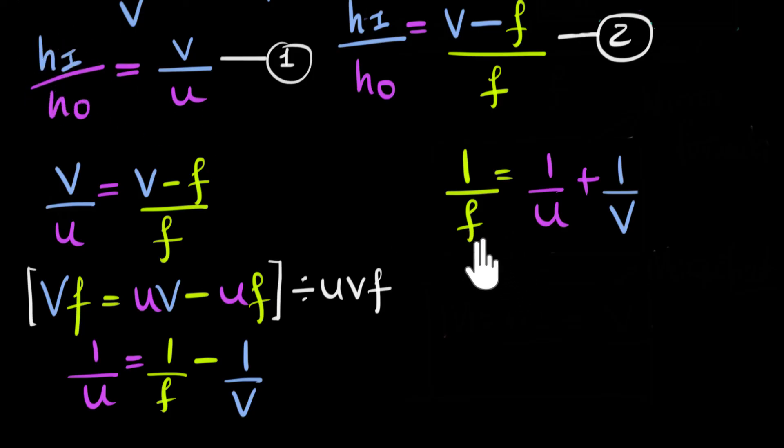But, one problem is that this is not a general formula. So I don't want to box it as of now. Because we only derive this for a concave mirror, and that too for real images. What if the image is virtual? What if you're dealing with a convex mirror?